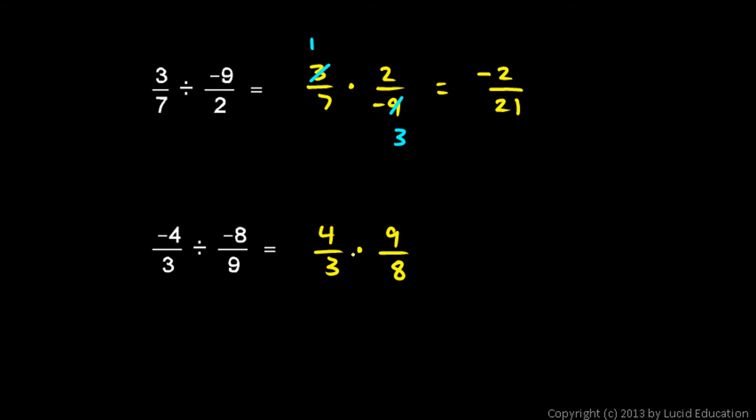And then let's see, does this simplify some. Yes it does. The 4 and the 8 reduce to a 1 and a 2. And the 3 and the 9 reduce to a 1 and a 3. And so we get 3 over 2, 3 halves. So negative 4 thirds divided by negative 8 ninths is positive 3 halves.